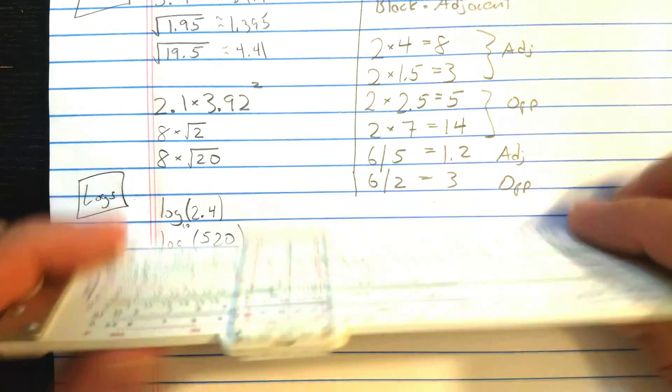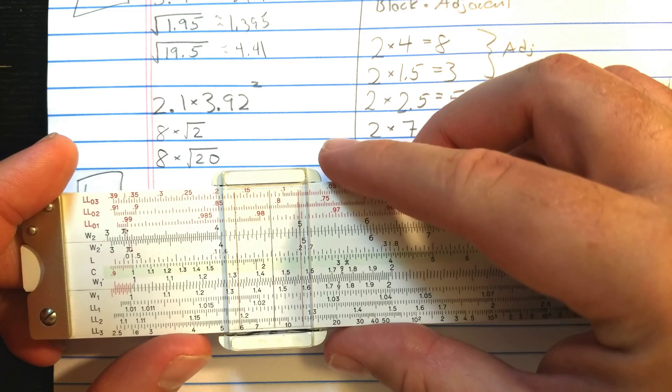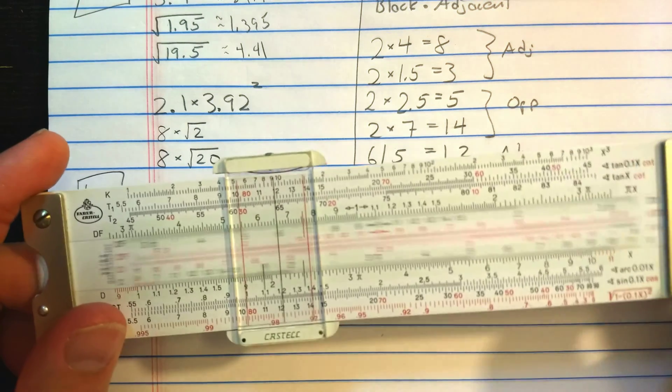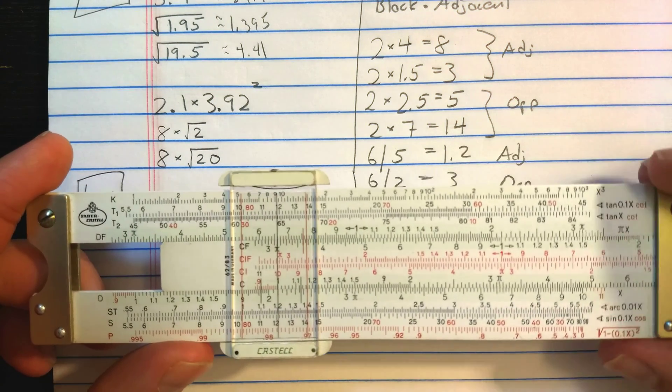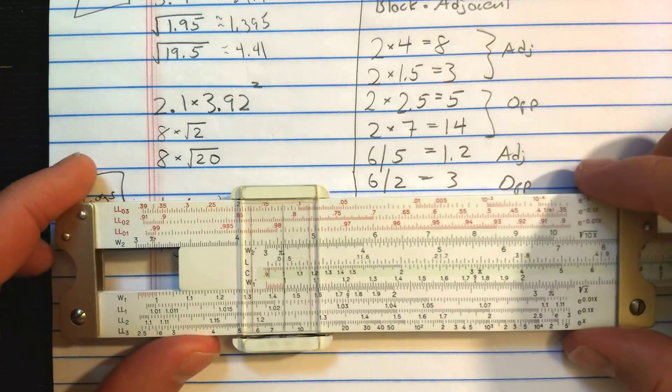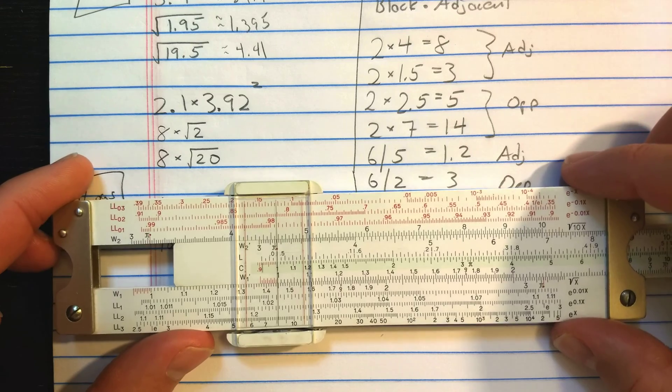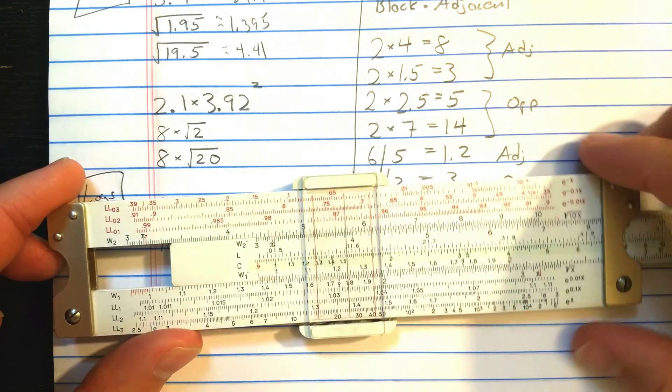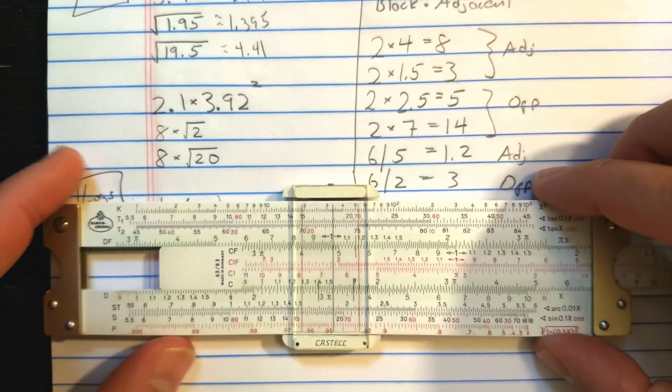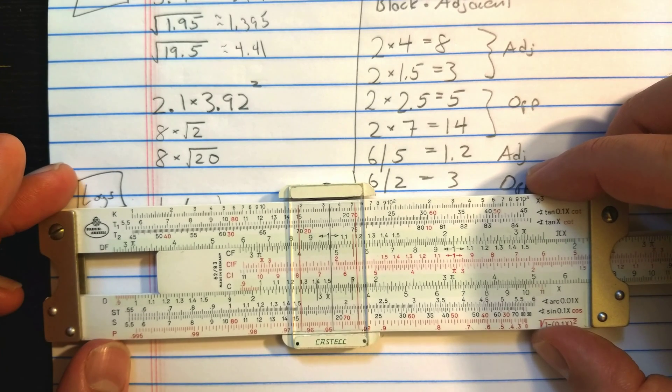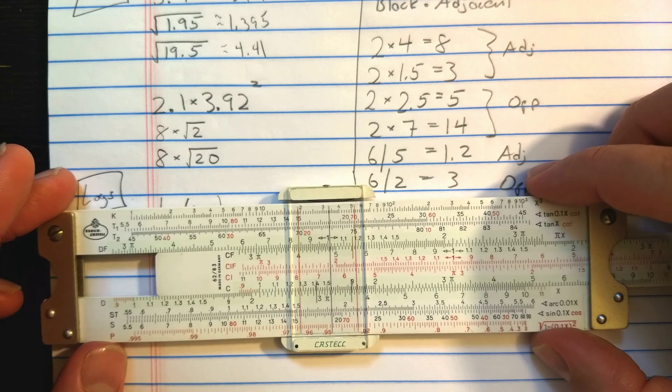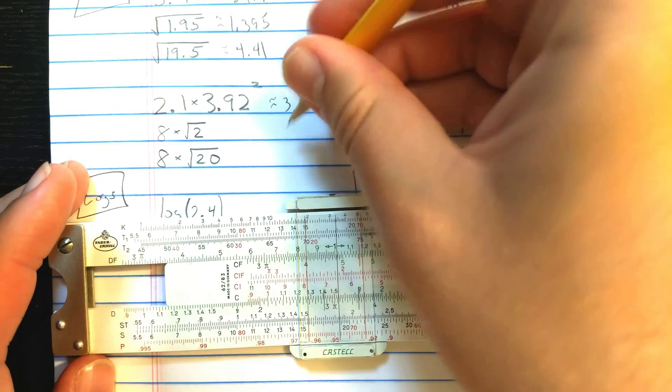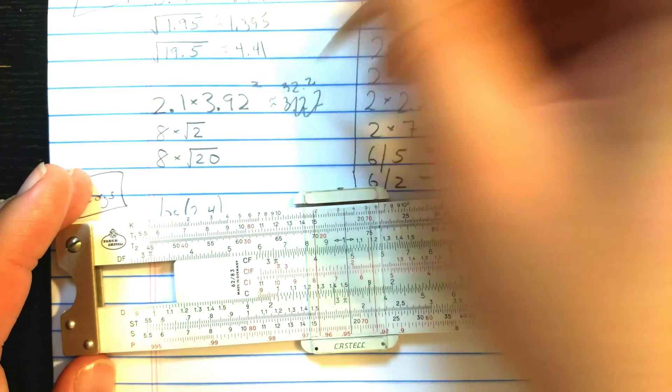The base scale here should be considered the W scale. So let's find 2.1 on D. Then I'm going to multiply, so let's pull the index under. Then I'm going to go out to the 3.92, but I'm going to do that on the W scale. So that's on W2 prime. 3.92, about there. Then let's flip back and read results on the D scale. It looks like about 3.22. Let's read that as 32.2.